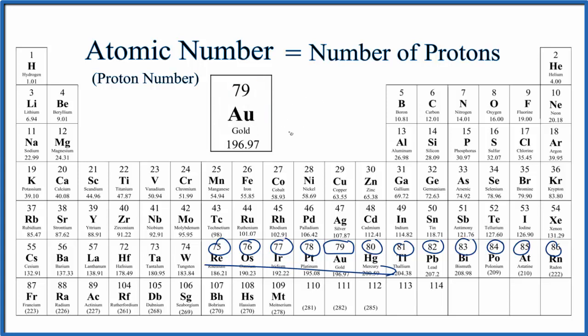One last thing. All the elements on the periodic table are neutral. They don't have a negative or a positive sign after them. Since they're neutral, the number of protons, that's going to also equal the number of electrons. That's why they're neutral.